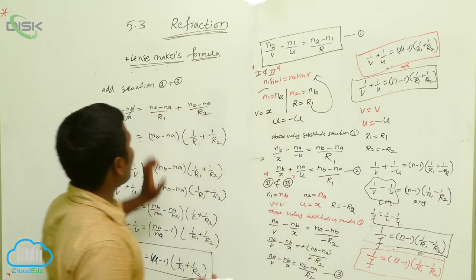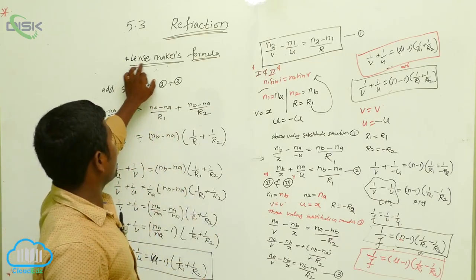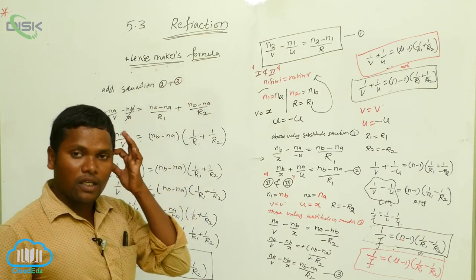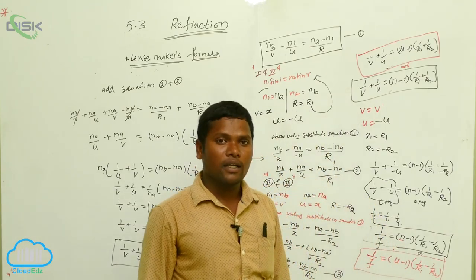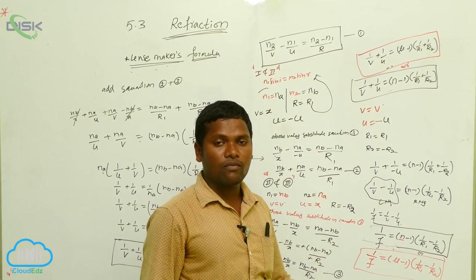So we are calling that the lens maker formula. What is the lens maker formula? It means 1 by f equal to mu minus 1 into 1 by r1 minus 1 by r2. This is the total lens maker formula.